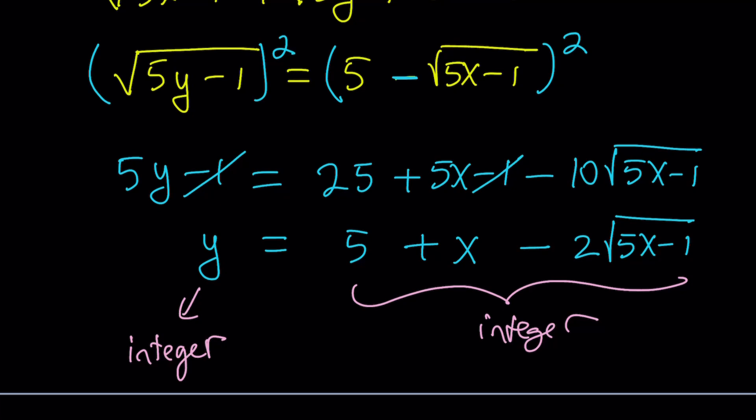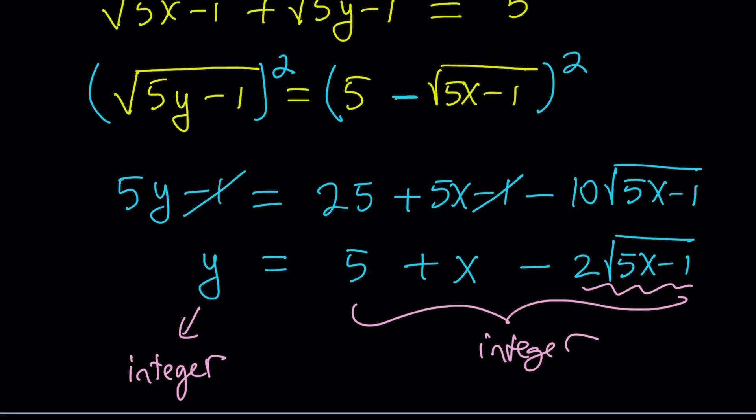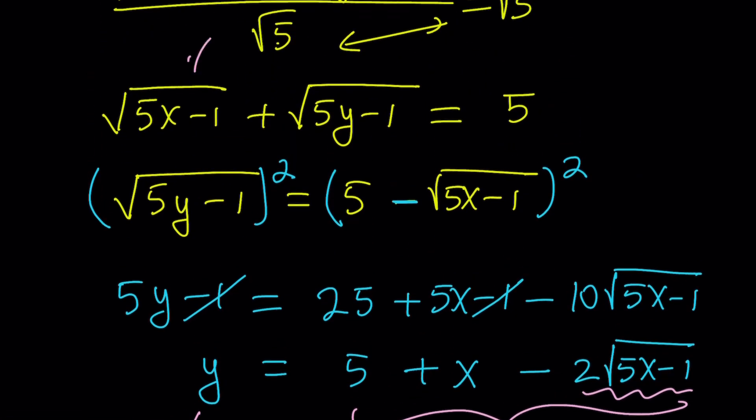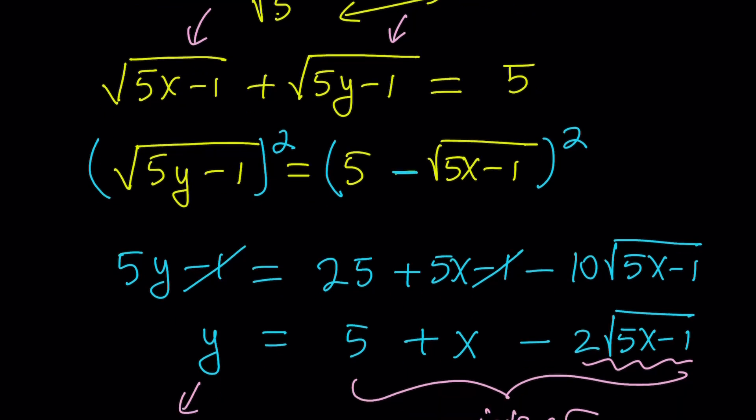So the only thing that needs to be an integer is this guy over here. 2 times the square root of 5x minus 1. But 2 is an integer if the radical, whatever the expression is, is an integer. Then 2 times that will definitely be an integer. And obviously, that could not be a fraction because if that is a fraction, if the square root of 5x minus 1 is a fraction, then this is also going to be a fraction. And from here, x is not going to be an integer. So we got to have it as an integer.